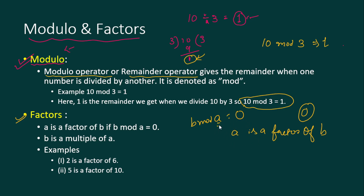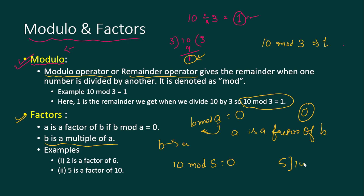If b mod a is zero, then we say a is a factor of b, or equivalently b is a multiple of a. For example, two is a factor of six, and five is a factor of ten because ten mod five gives zero — ten is divisible by five. When the result of modulo is zero, we say a is a factor of b.